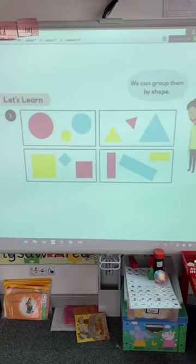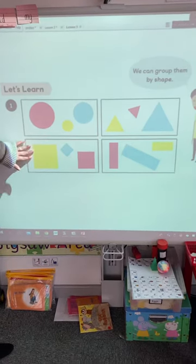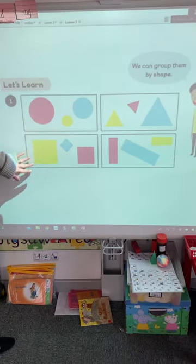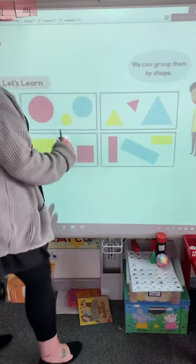And then let's learn it. So it's going through examples of what we could do. So we could do it by shapes, so all the circles, all the squares, all the triangles, all the rectangles.